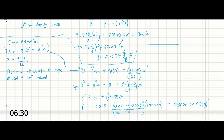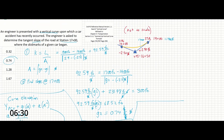This second method might feel faster, but you do have to inherently understand that the derivative of the curve elevation formula gives slope — something not explicitly called out in the reference manual. Either way, both approaches give 0.74%. If you prefer not to use the derivative method, the original algebraic approach works just as well. And that should be it for this problem.